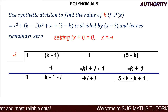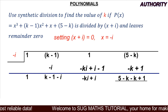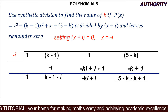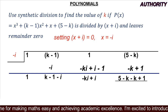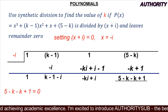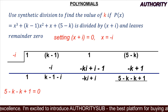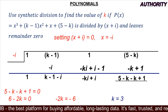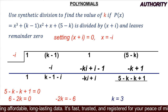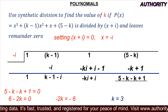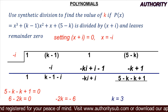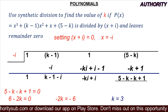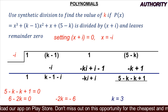The question states the remainder is 0, so we set 6 − 2k = 0. Taking 6 to the other side: −2k = −6. Dividing both sides by −2, we get k = 3.